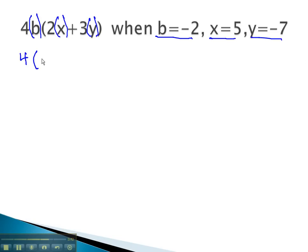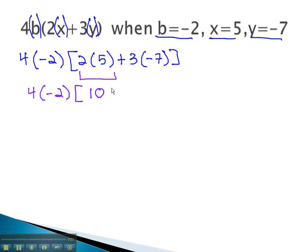When we replace, we have 4b, which is negative 2, times 2x, which is 5, plus 3y, which is negative 7. Order of operations tells us to work inside the parentheses first, multiplying from left to right. So we now have 4 times negative 2, times 2 times 5 is 10, plus 3 times negative 7.